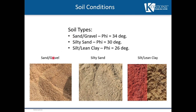Once we determine how tall a wall is going to be, the loading condition, and the block we're going to use, we want to determine what type of soil we have on site. Do we have a sand or gravel material or a silty clay? By determining the soil type behind the wall, we can determine what load the soil is going to impart on the retaining wall. For sand and gravel, we assign a friction angle — typically 34 degrees or higher. For a silty sand, it could be 28 to 32 degrees, and for sand, silt, or lean clay, the friction angle would be 26 degrees or less.